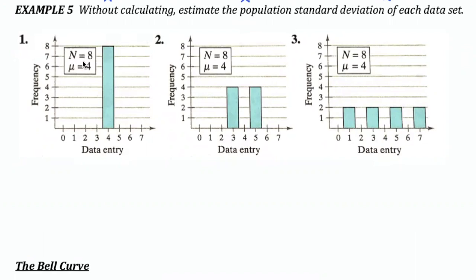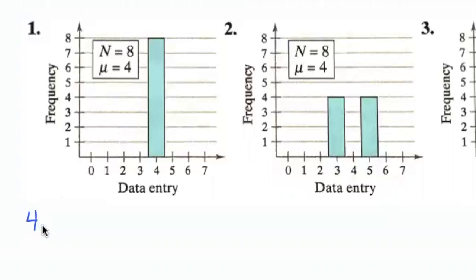Example 1 says we have a whole population that is 8 pieces of data. And specifically, we can see that they're all the number 4. So this is the data set represented by the graph. We're told that the mean is 4, which it clearly is. What should the standard deviation be?